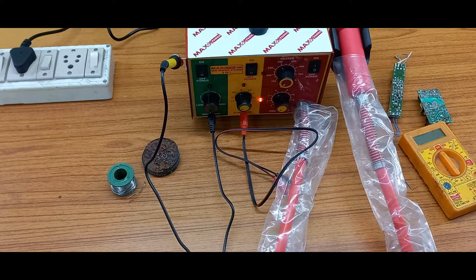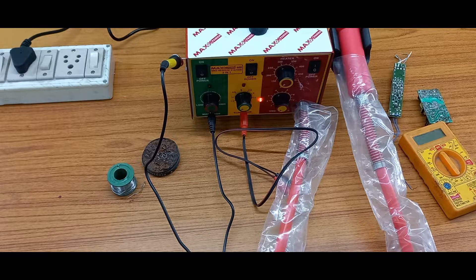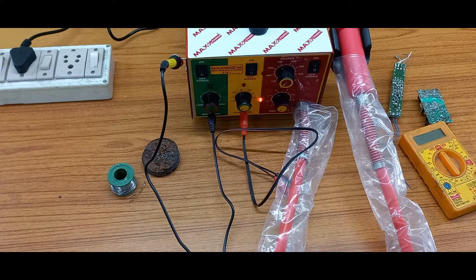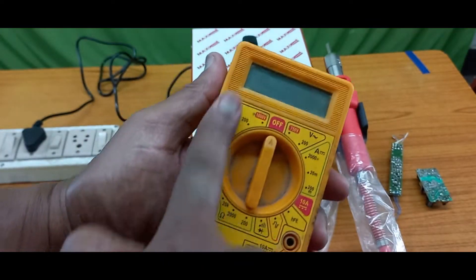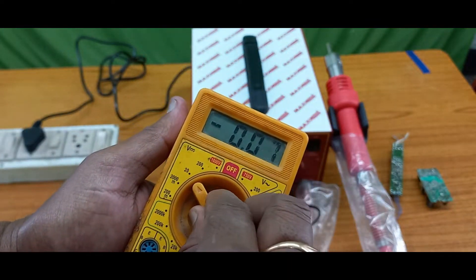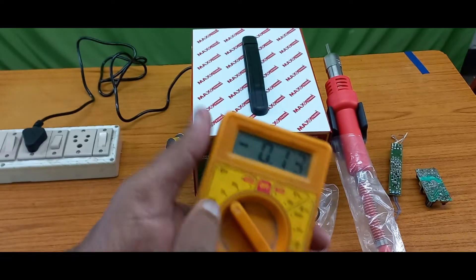Now I will show you the battery eliminator, 1.5 volts to 12 volts. First I will take one digital multimeter, select the 20 volts range DC voltage.